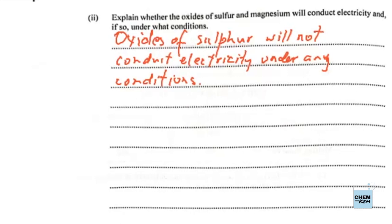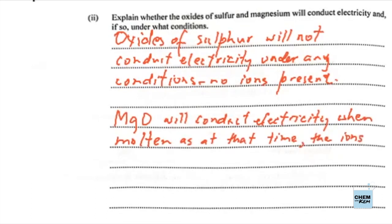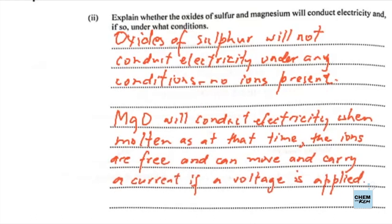For the oxide of magnesium, MgO, it will conduct electricity when molten, as at that time the ions are set free and can move and carry a current when a voltage is applied. We need not mention dissolving in water because magnesium oxide is not soluble in water. So we only refer to the molten state here, and that is enough for the four marks.